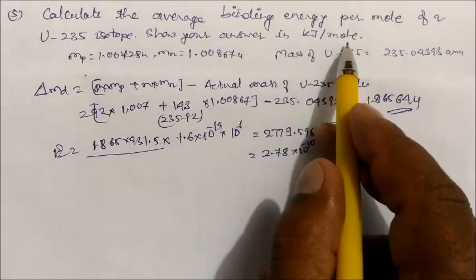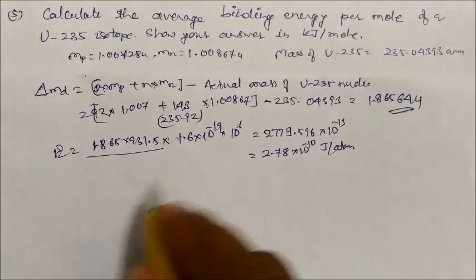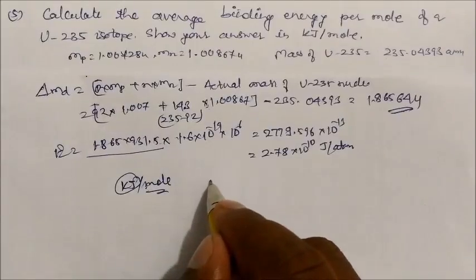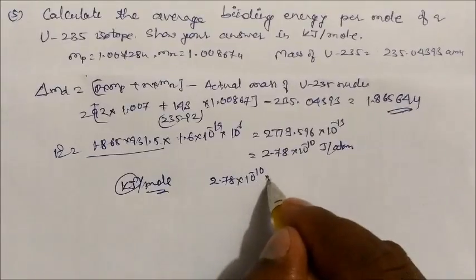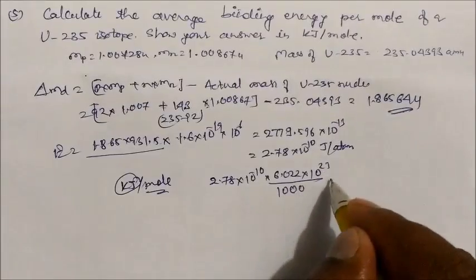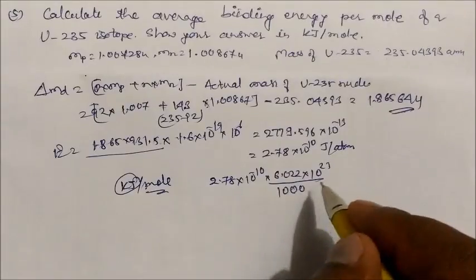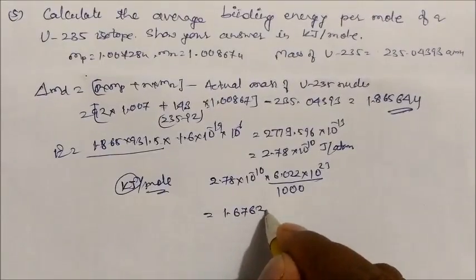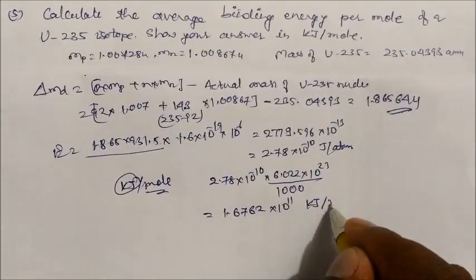Now convert to kilojoules per mole. Take 2.78 × 10⁻¹⁰ joules per atom, multiply by Avogadro's number 6.022 × 10²³, and divide by 1000. On solving you will get 1.6762 × 10¹¹ kilojoules per mole. This is the answer.